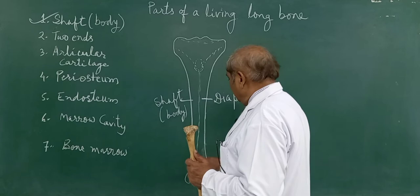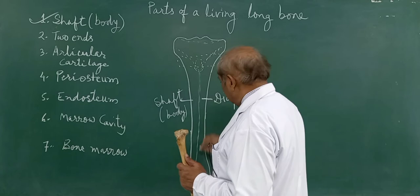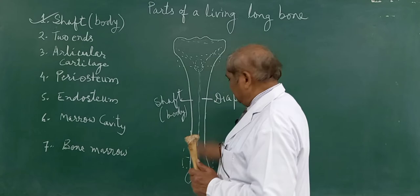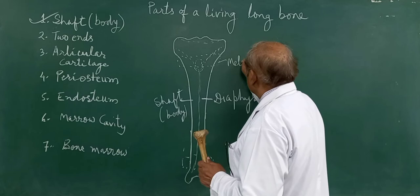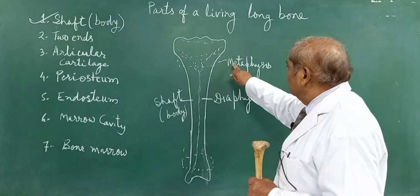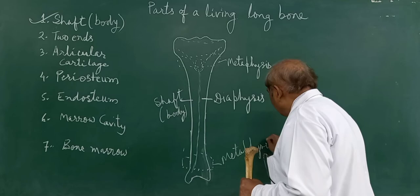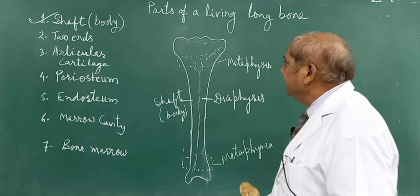If you see this, the terminal ends of the shaft — this is towards the upper end and this is towards the lower end. The expanded part of the shaft which meets with the ends — this part here and here — this expanded part of the shaft meeting to the ends is called as the metaphysis. So there is an upper metaphysis and a lower metaphysis. These are the parts of the body or the shaft of any living long bone.